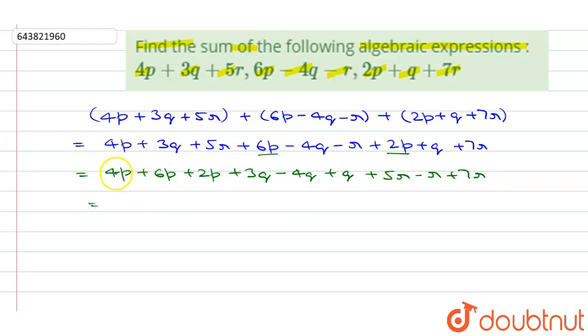Simplify it. 6 plus 4 is 10, 10 plus 2 is 12. So we will get here 12p. 3 plus 1 is 4. So we will get here plus 4q minus 4q.